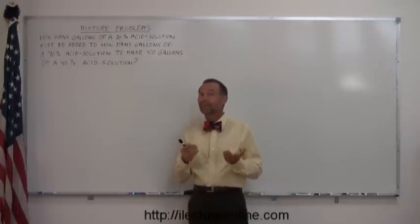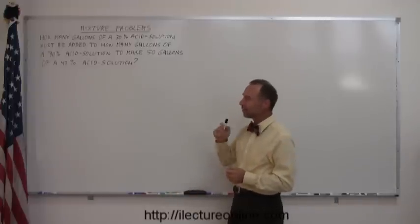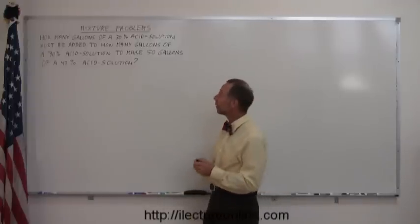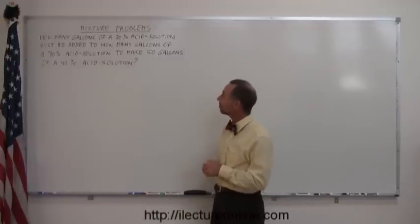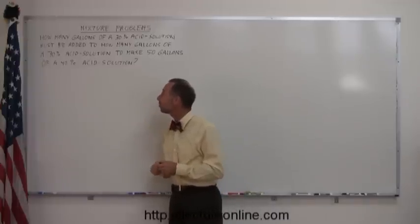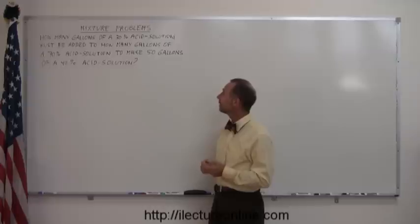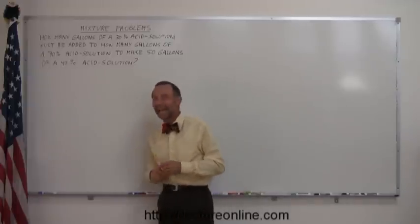Alright, let's read this one. One of the things you need to do when you do mixture problems or any kind of word problems, you need to read the problem very carefully. So here it goes. It says, How many gallons of a 30% acid solution must be added to how many gallons of a 70% acid solution to make 50 gallons of a 40% acid solution.